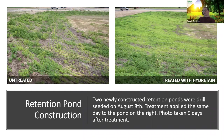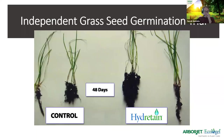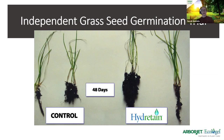A similar new construction erosion control scenario involved two ponds being built. They drill-seeded one of the ponds with Hydrotain — these photos were taken nine days after treatment. In an independent grass seed germination trial, the researcher pulled out seedlings to look at root development. In seed germination we see not only speed of germination coming up faster, but also better seedling survival, faster overall establishment, and a healthier root system established early on.